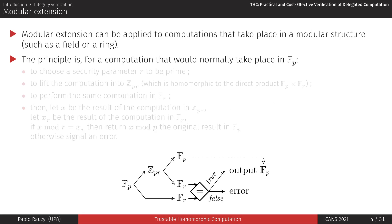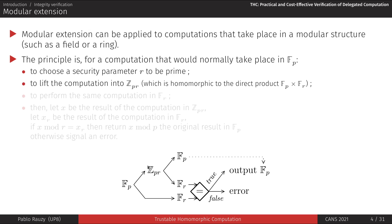Modular extension can be applied to any computation that takes place in a modular structure, such as a field or a ring. To verify a computation that takes place in a finite field of order P (Fp), the idea is to generate a random small prime — our security parameter R — then perform the computation in Zpr, the ring of order P times R, instead of in Fp. This ring is isomorphic to the direct product of the fields of order P and R, meaning you can get back the result in Fp by reducing modulo P, and the same computation in Fr by reducing modulo R.